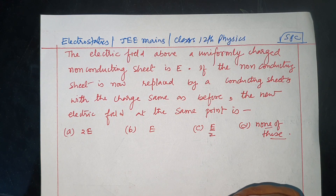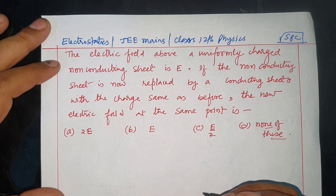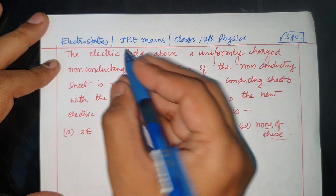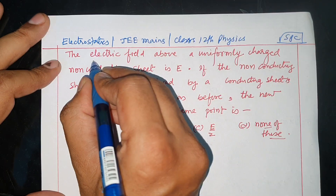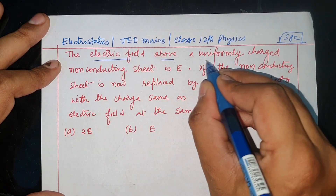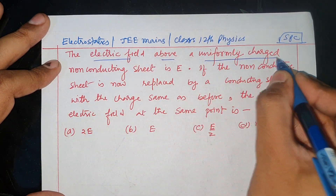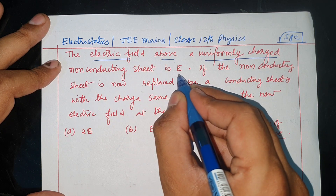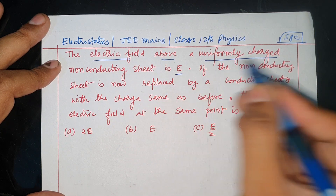Hello dear students, welcome back to my channel Physics SPC. Today we have an electrostatics question: The electric field above a uniformly charged non-conducting sheet is E.